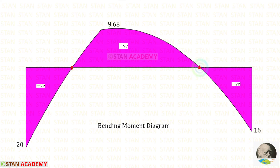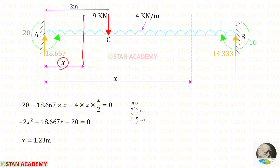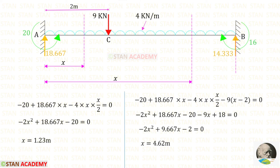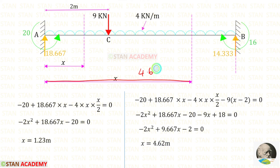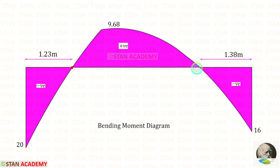In two points the bending moment becomes zero. We can find the location of these points by making sections at distance x from point A. For the first zero-moment location, using the right hand side rule, we get x equals 1.23 meters. For the second location we get x equals 4.62 meters, meaning that distance from B is 6 minus 4.62, which equals 1.38 meters. We have now found both locations where the bending moment becomes zero.